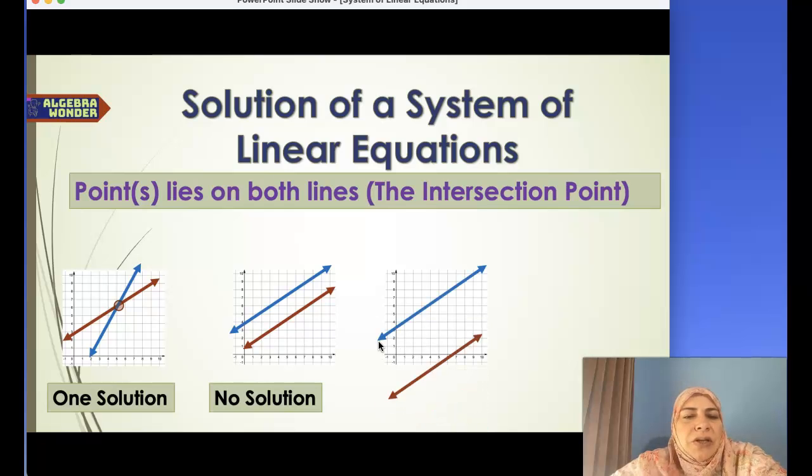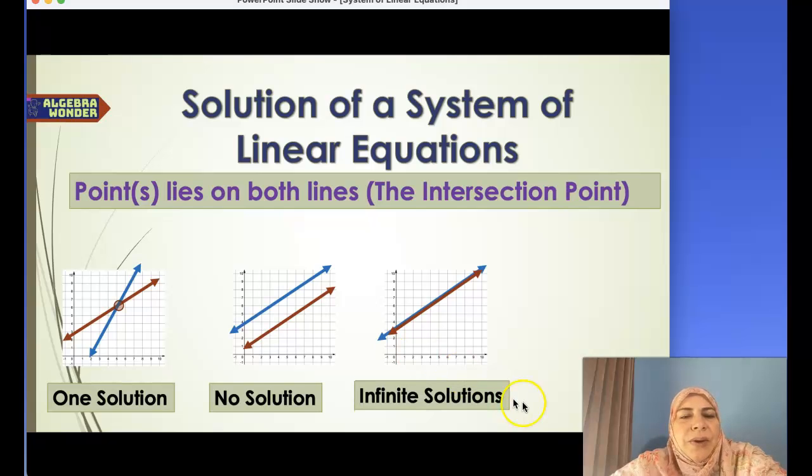What if the two lines have the same equation, same y-intercept and same slope? In this scenario, we have infinite solutions because every single point lies on both lines. This point can be a solution, this point, this point. We have infinite solutions because every single point lies on both lines.